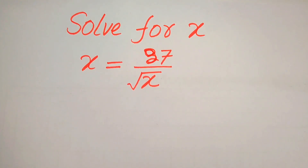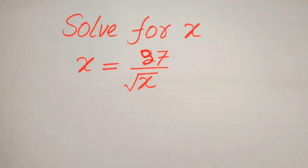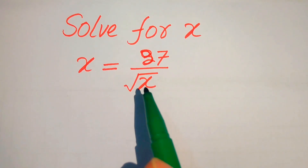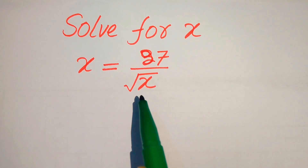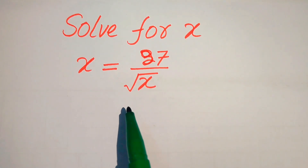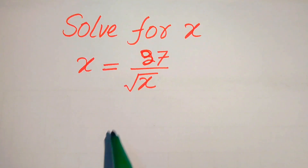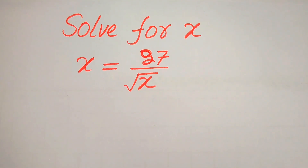Hello everyone. How to solve this problem for the values of x if we have x is equals to 27 divided by square root of x, and we solve this problem for all the values of x.